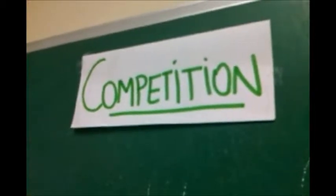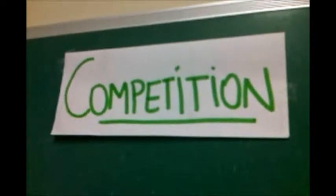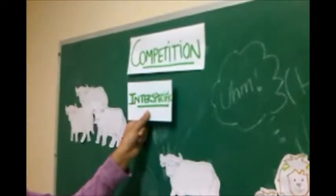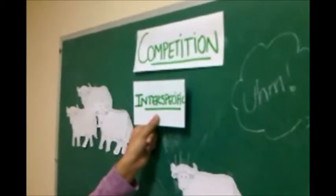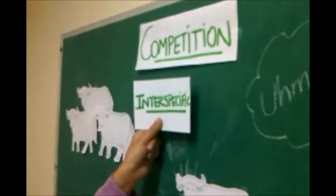And we're doing an ecology project on competition. Competition is an interaction between individuals of two species in which each is harmed by the shared use of a resource that limits their ability to grow, survive, or reproduce. In this video, we're going to talk about interspecific competition, which is the competition between members of different species.